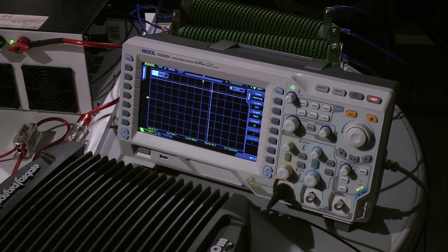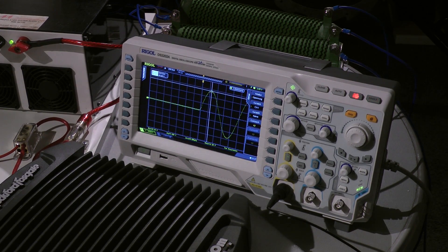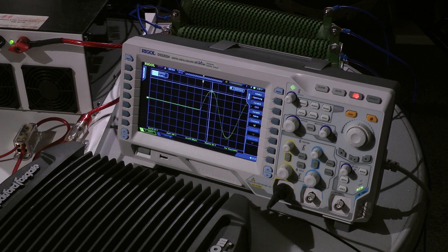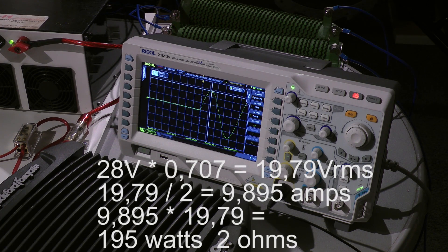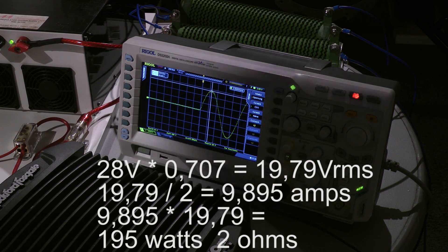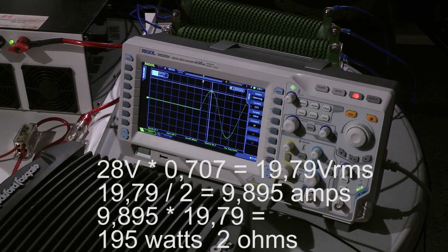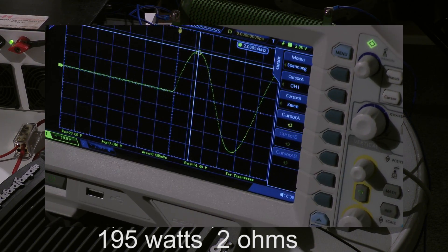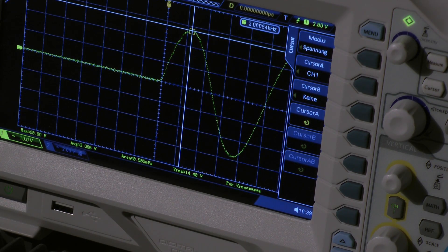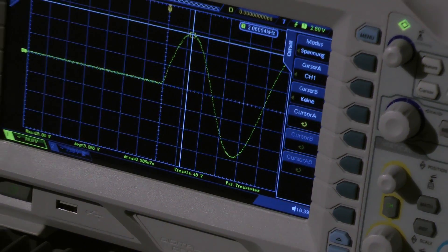The next test is on 2 ohms mono. Now we have a peak voltage of 28 volts. This is around 195 watts on 2 ohms. Also here the signal is unclipped so everything is clean.